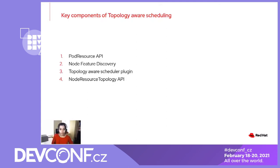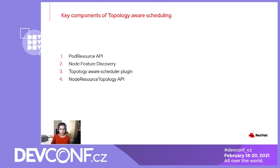Pod Resource API is a kubelet endpoint for pod resource assignment. It was enhanced to add support for CPU and device topology, an additional endpoint to enable watch support, and to obtain allocatable resource information.